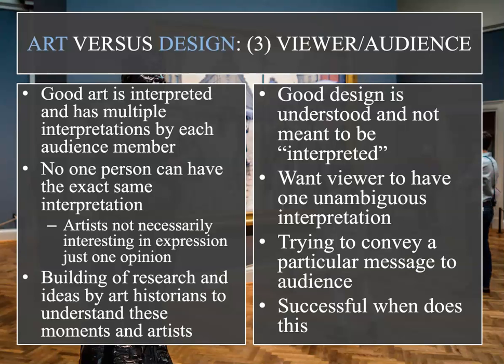The third section is art versus design in viewer and audience. For art, good art is interpreted and has multiple interpretations by each audience member — no one person can have the exact same interpretation. Artists are not necessarily interested in expressing just one opinion, and art historians build research and ideas to understand these moments and artists. Versus good design, which is understood and not meant to be interpreted. Design wants viewers to have one unambiguous interpretation, trying to convey a particular message to the audience. This very much connects back up to purpose and originality.